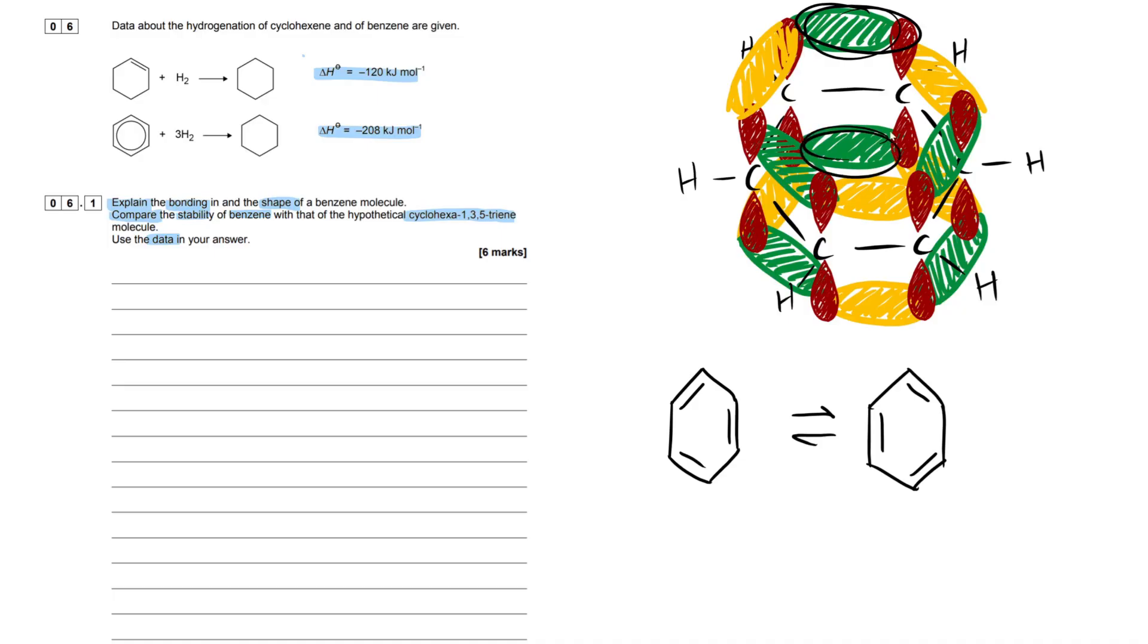They disproved this - the green pi orbitals here would interchange to become the yellow, but that's not what happens. These actually delocalize completely. We don't have separate pi bonds - they delocalize into one giant donut-like shape above and below the plane of the ring. That's my diagrams finished. I'm going to take that knowledge and write it out in a concise, coherent sequence to get all six marks.